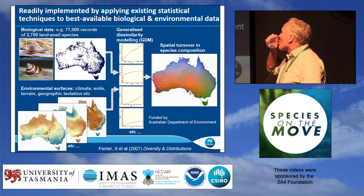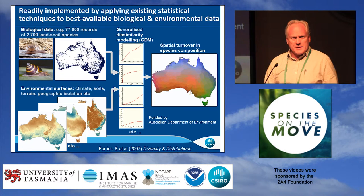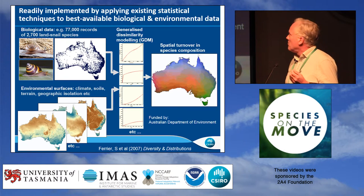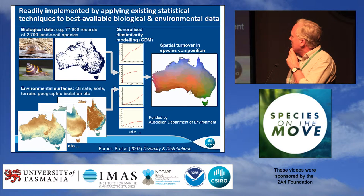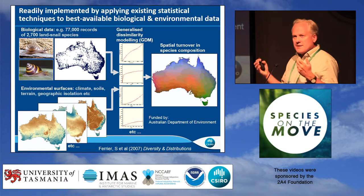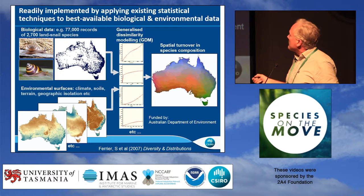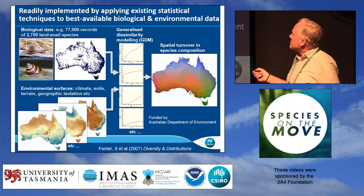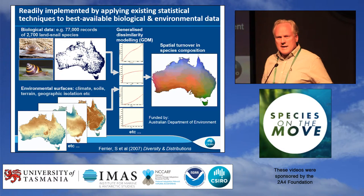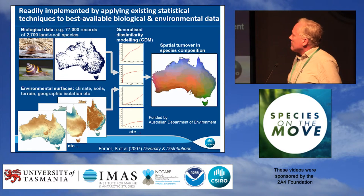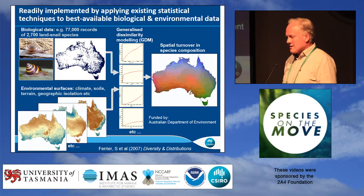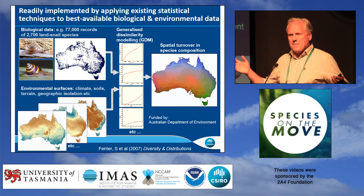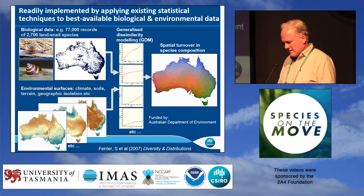There are various statistical techniques that can be used to fit these models. The technique of choice in our group is something called generalised dissimilarity modelling, which we developed many years ago. It's essentially a way of combining best available biological data for a group — in this case, masses of records for a large number of land snail species — with present-day environmental layers to fit a model that transforms that multi-dimensional environmental space, essentially warping it so that distances within that space now better match compositional differences in the biota.